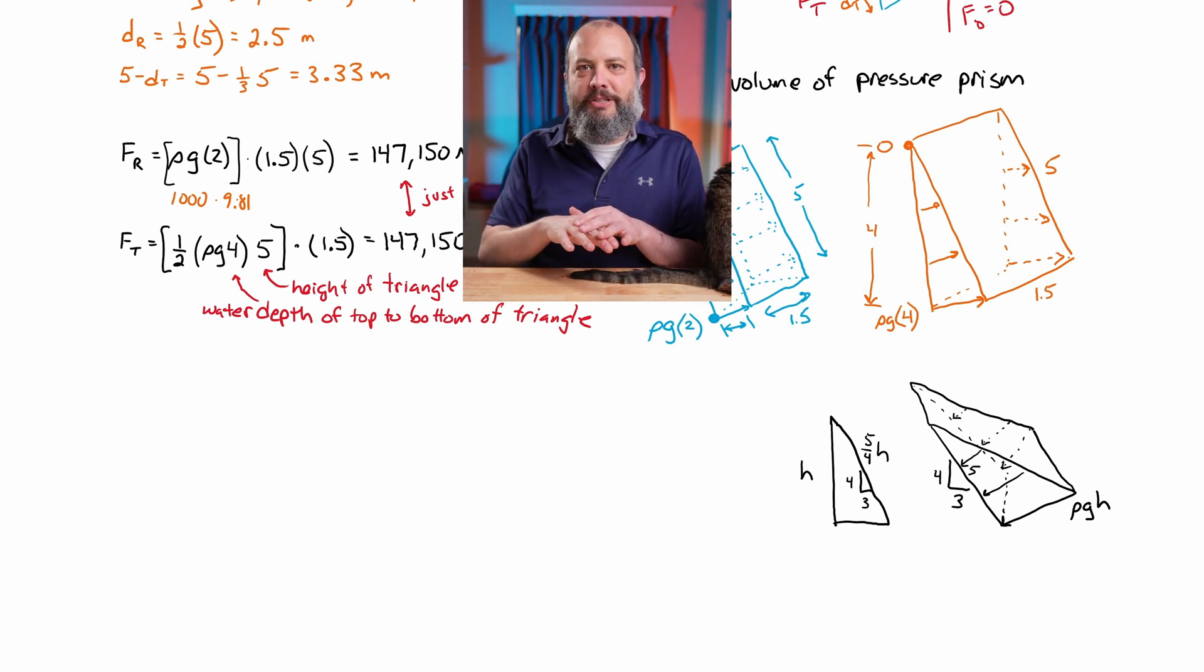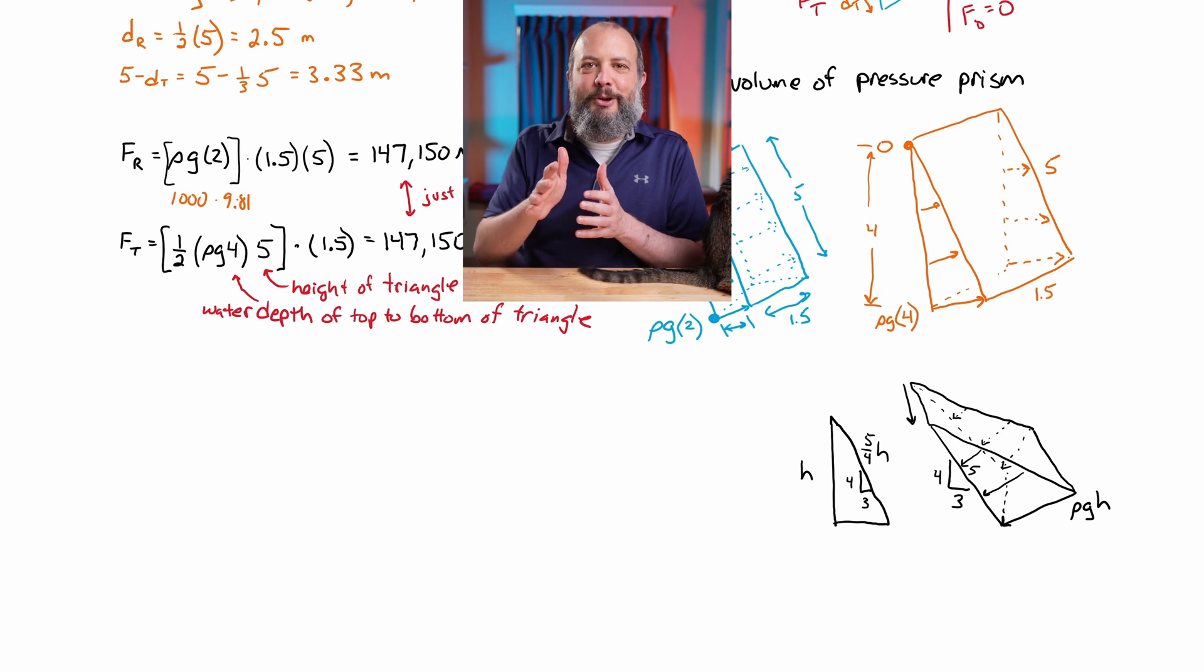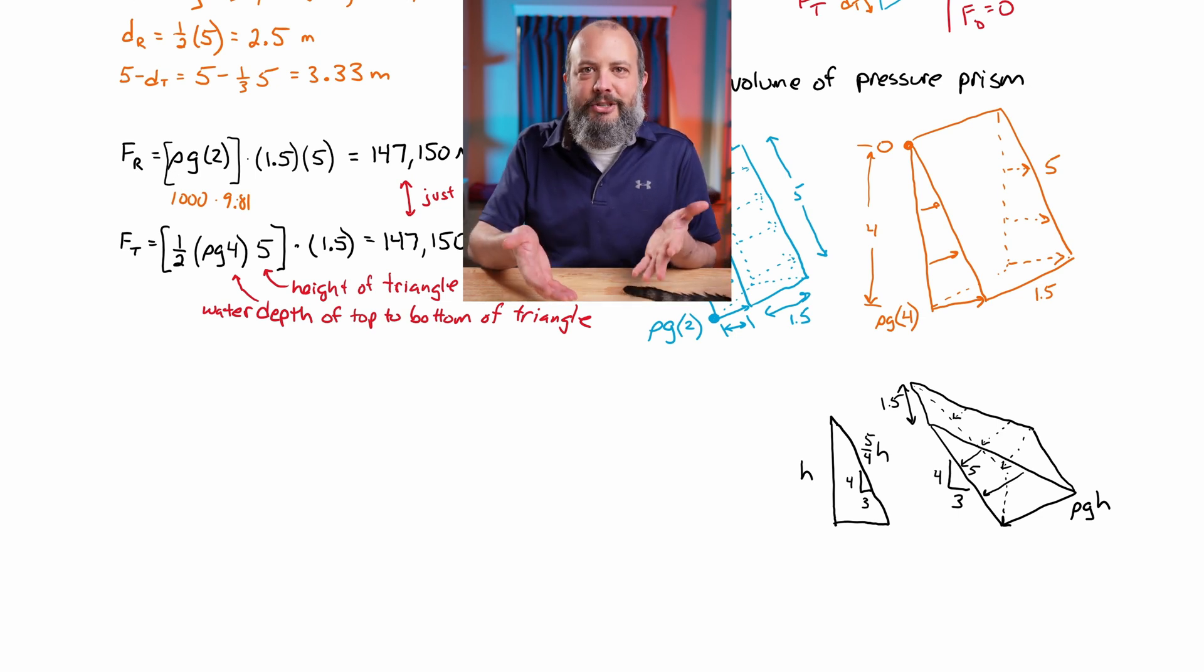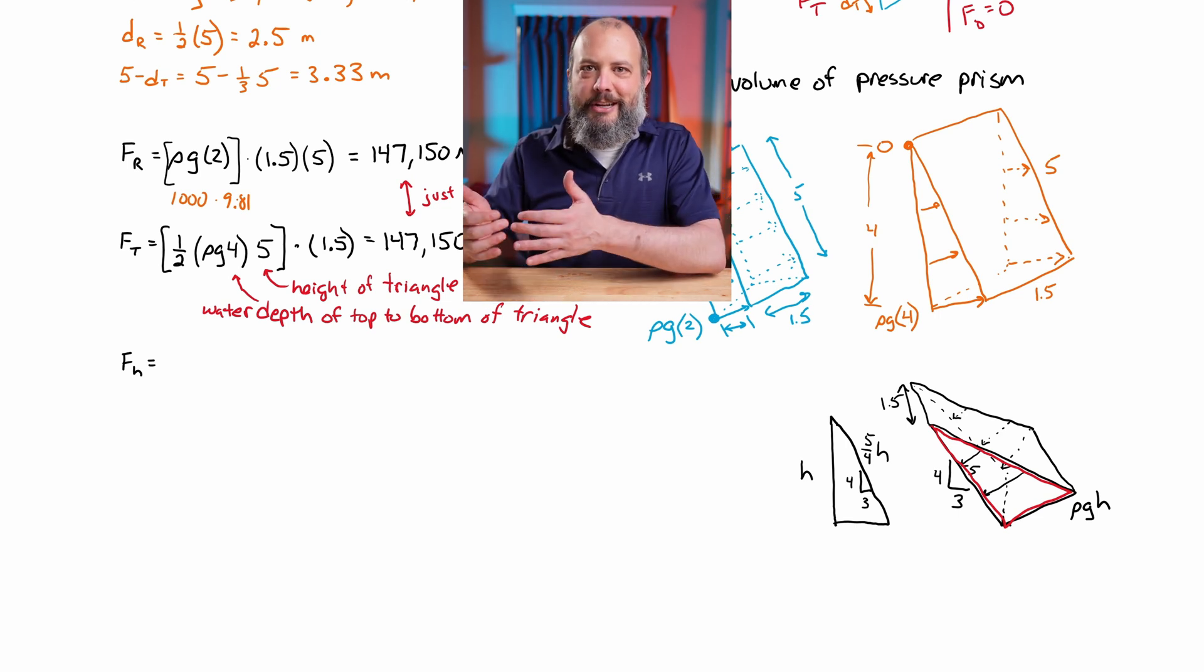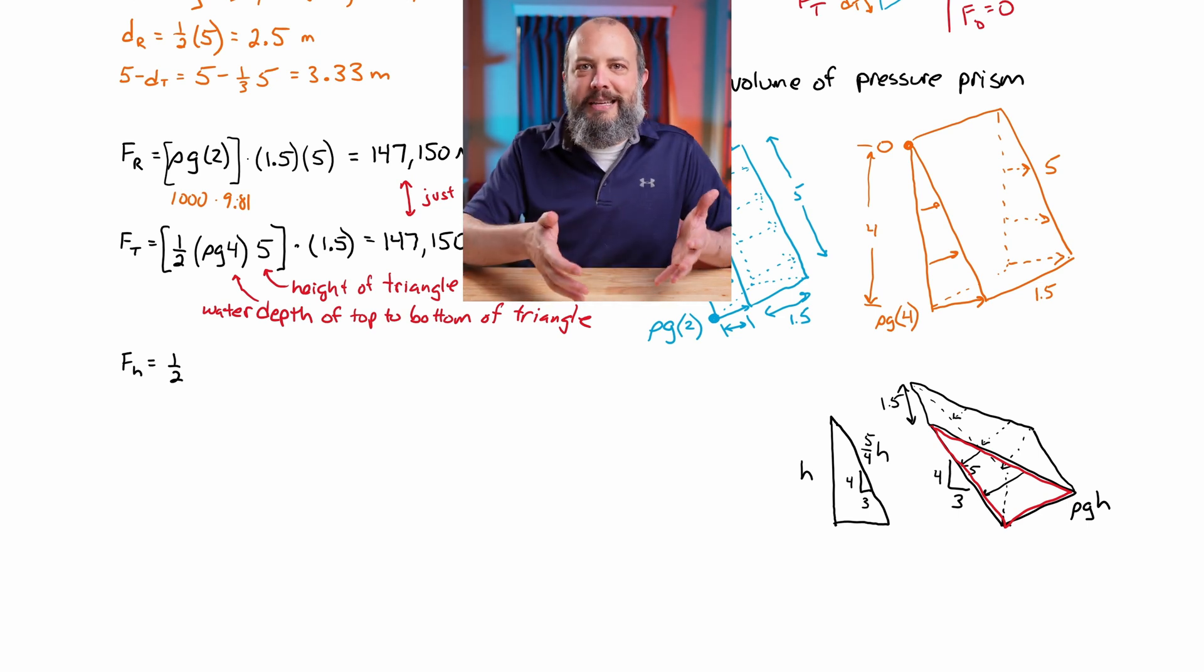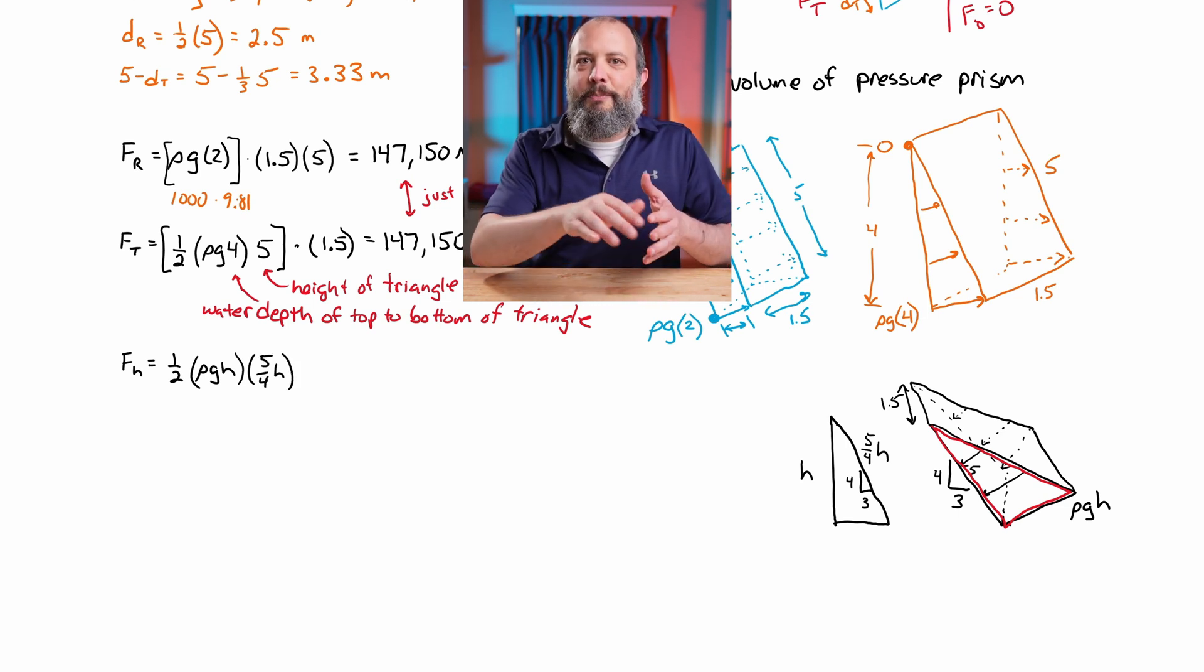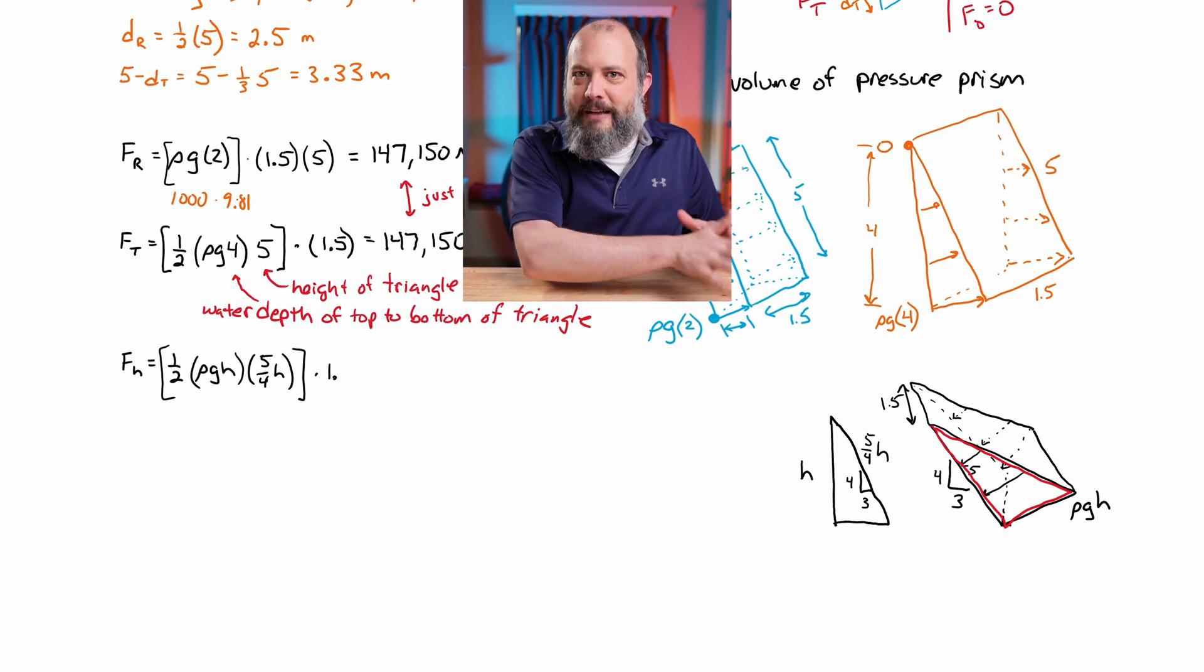And so the volume of the pressure prism is going to be the area of that triangular distributed load, one-half base times height, where one-half and then the base is rho gh, and the height is 5 fourths h. So in order to find fh, which is the force acting on the right-hand side of the gate, the volume of the pressure prism is going to start by finding the area of this red triangle and then extruding it a distance of 1.5 into the page. So this red triangle has area one-half base times height, where the base is rho gh, and the height is 5 fourths h. Again, it's not just h, because h represents the depth of water straight down, but the height of this sort of angled red triangle is along a diagonal, which is the hypotenuse, which was the 5 fourths of h.